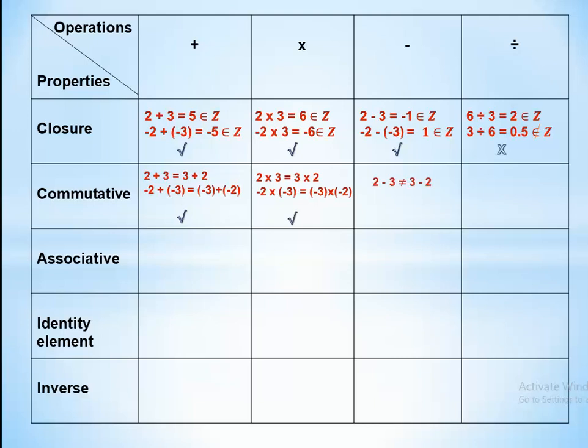However, 2 minus 3 equals negative 1 and 3 minus 2 equals positive 1, so 2 minus 3 does not equal 3 minus 2 — commutative does not exist in subtraction. And 6 divided by 3 does not equal 3 divided by 6, so commutative does not exist in division. Commutative exists only in addition and multiplication.